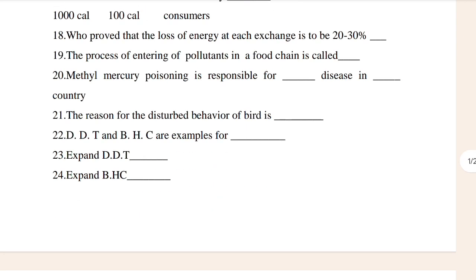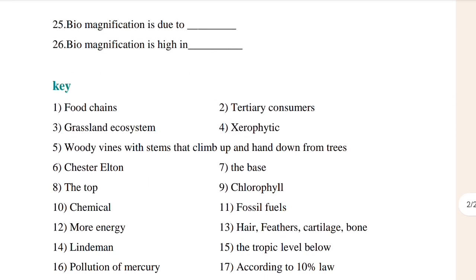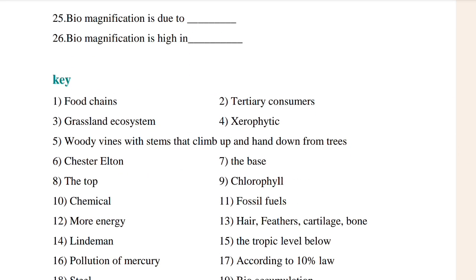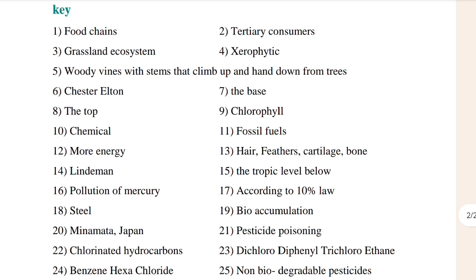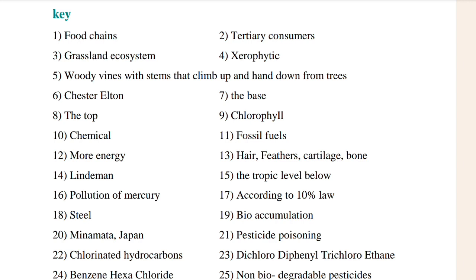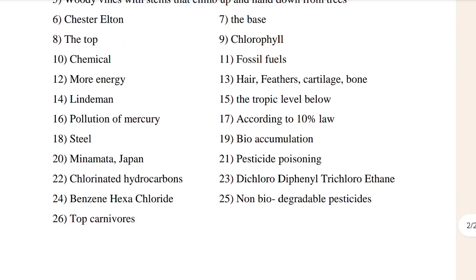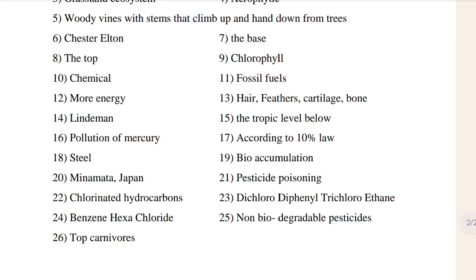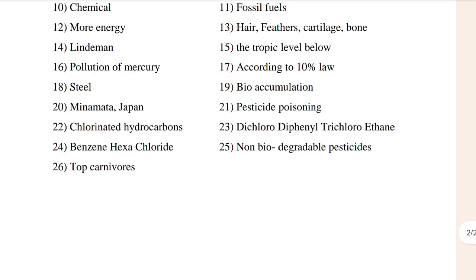Till here if it is clear, then see questions 25 to 26 — biomagnification is due to the blank, biomagnification is high in blank. The keywords are also given here: food chains, territory, consumers, grasslands, economicals, and toxical sources.